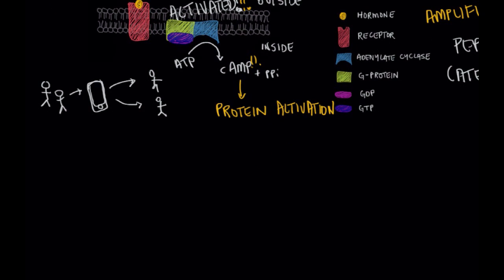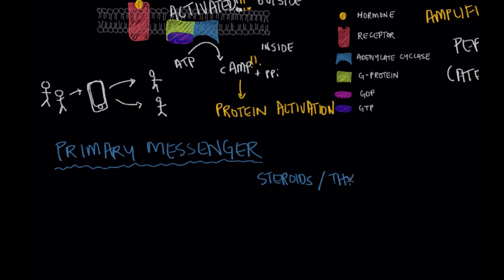And then the other major method of hormone action on a cell is as a primary messenger. Certain hormones like steroids and thyroid hormones can actually cross the cell membrane. And it eliminates this entire middleman system that we set up before.